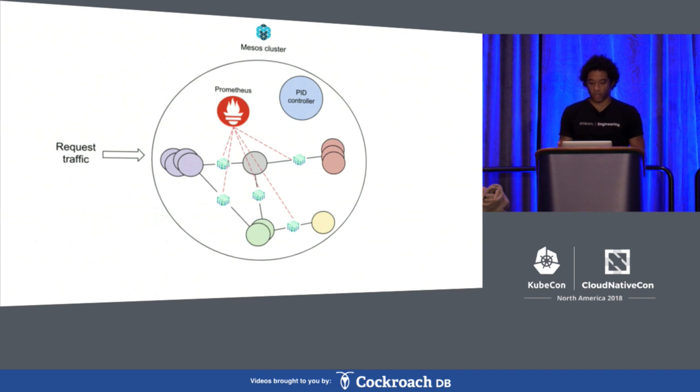And this is kind of a holistic picture, an entire Mesos cluster we may run. So there's many microservices, all proxied through Linkerd. And all of those proxies and all the services are sending metrics data to Prometheus, which in turn can be used by the PID controller to make auto-scaling decisions and make sure we're not under-provisioned, over-provisioned, et cetera.